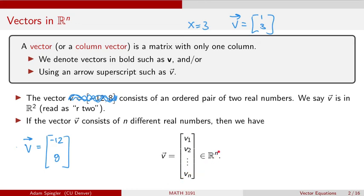We indicate how many values are contained in the vector by putting a superscript over here that indicates that number. So in general, we would say this is an n-dimensional vector. It's in Rn.